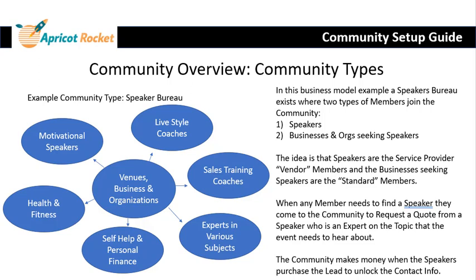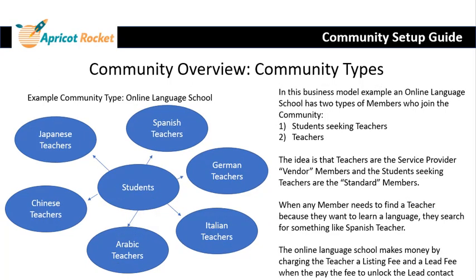The first example is a speakers bureau. In this case, you have organizations or people — businesses such as venues and organizations — that are seeking speakers for some sort of event. They might be looking for motivational speakers, sales training coaches, lifestyle coaches, or any number of different things. You have two types of members: speakers, who are the vendor members, and the people looking for speakers, who are the standard members. When a member needs a speaker, they come into the community and request a quote from a speaker expert on the topic they want. The community makes money when the speaker purchases a lead to unlock the contact information of someone who requested a quote.